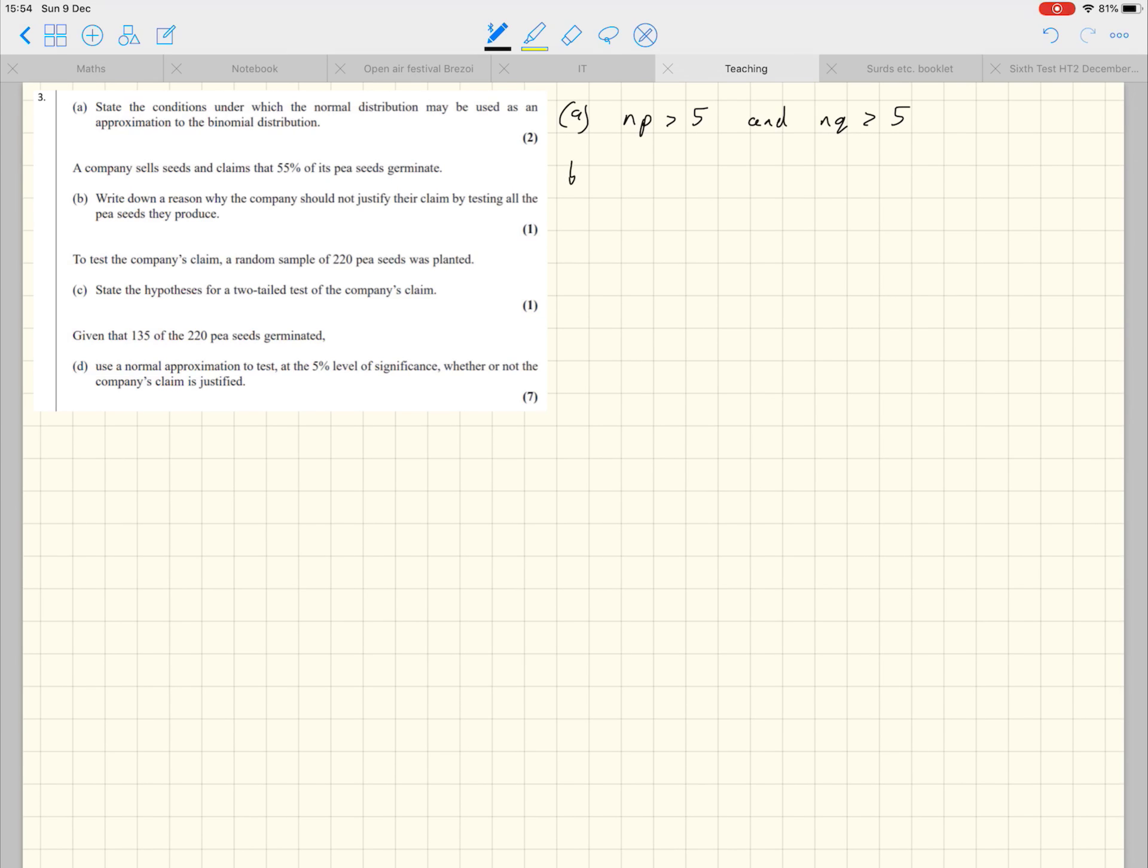Now part B, part B is one of those questions that simply forces you to carefully understand what's going on here in this question. So why doesn't the company just test all of the pea seeds they produce instead of a small sample of them? Well, it's obvious when you think about it, because to test a pea seed to see whether it germinates means leaving it, or giving it the right conditions to germinate, and seeing whether it germinates or not.